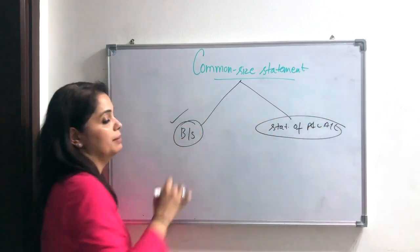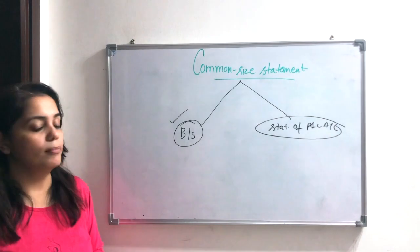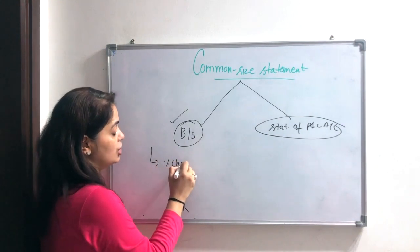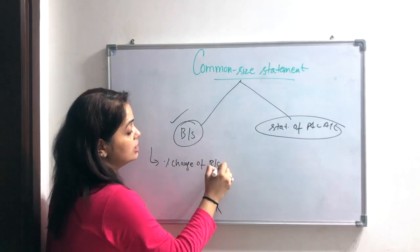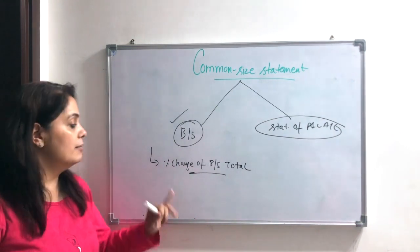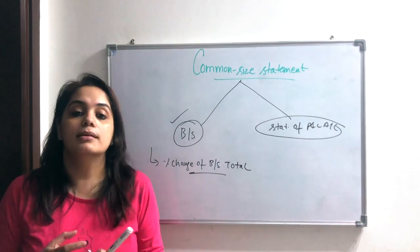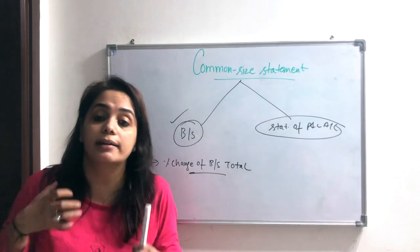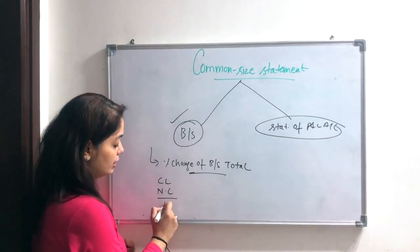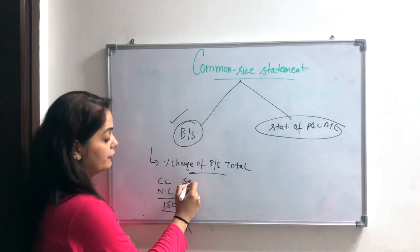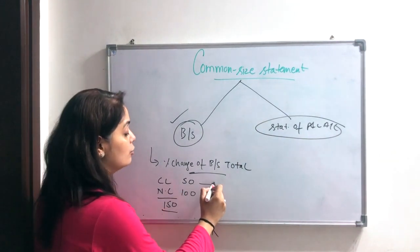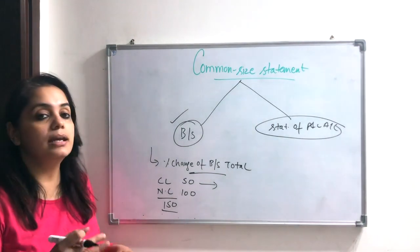First I will tell you about the balance sheet — what we can see in the balance sheet. Basically we want to highlight what is the trend. Suppose my current liabilities and non-current liabilities total is 150, where current liabilities are 50 and non-current liabilities are 100.